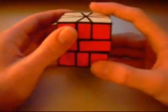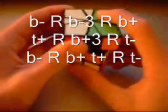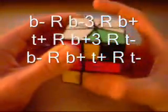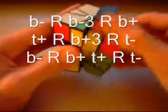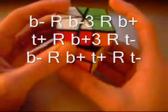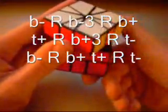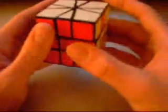is B minus, R, B minus 3, R, B plus, T plus, R, B plus 3, R, T minus, B minus, R, B plus, T plus, R, T minus. And now you should have one switch, R, and now you should have one switch, and now you should have one switch pair up here,